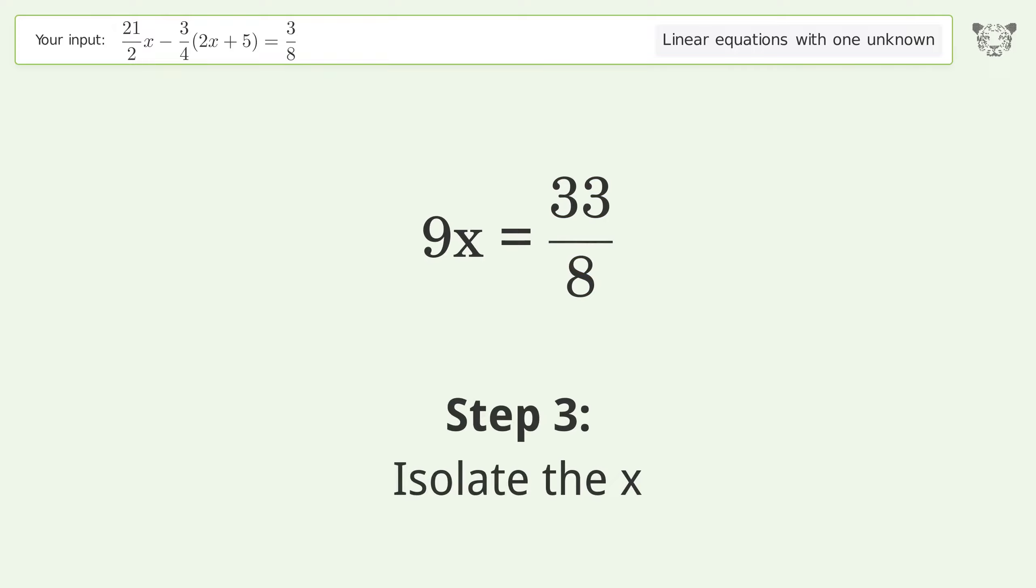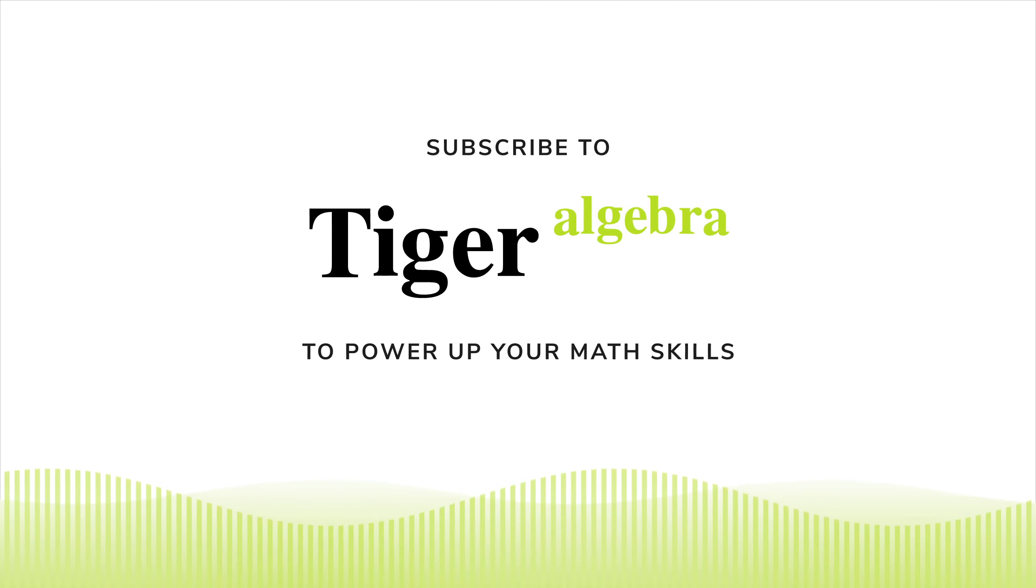Isolate the x. Divide both sides by 9. Simplify the fraction. Simplify the arithmetic on the left side.